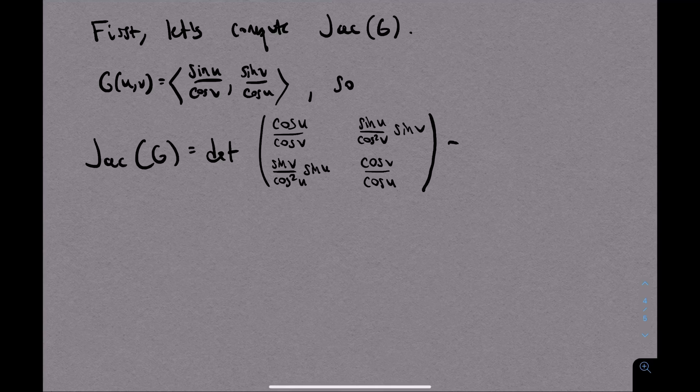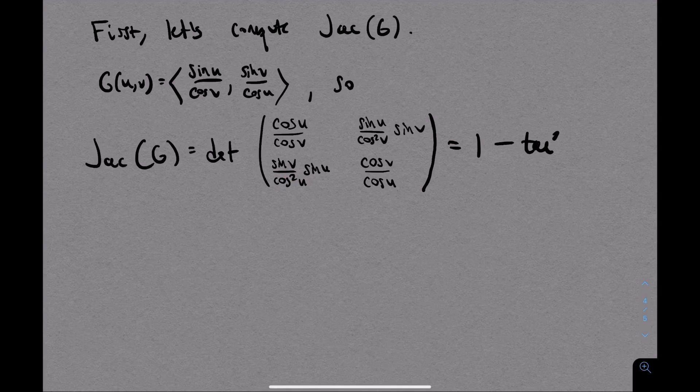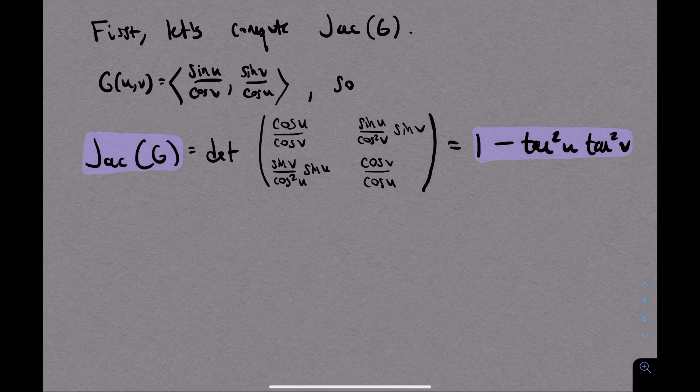Next, when we take the determinant, look at what happens with the first term. The top left corner times the bottom right corner is actually 1. All of these cosines cancel each other out. Then we'll subtract the product of the off-diagonals, and I'll do some algebra in one step. Notice that we have a sine of u in both terms, and then a cosine squared of u in the denominator. So in the product we have sine squared of u over cosine squared of u, which is just tangent squared of u. And likewise we get a sine squared of v over cosine squared of v, which is tangent squared of v. So there's our Jacobian.